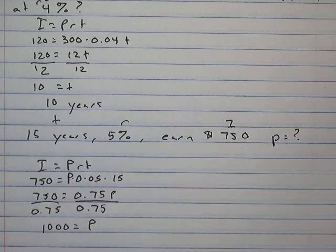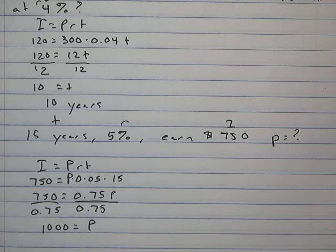We find out that we originally had $1,000 in that bank account in order to earn $750 at 5 percent for 15 years.